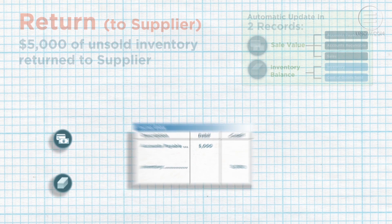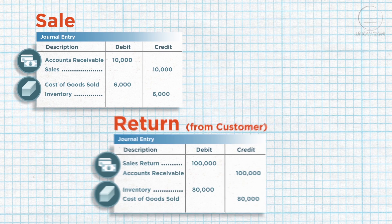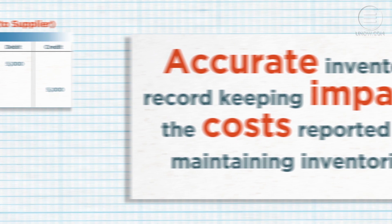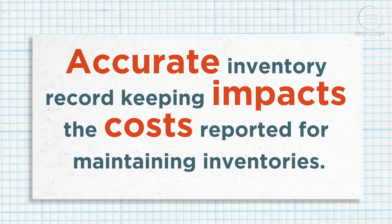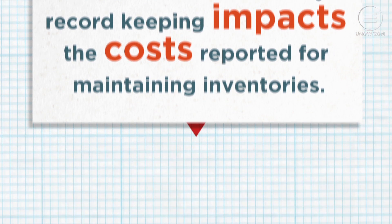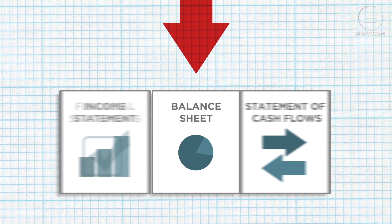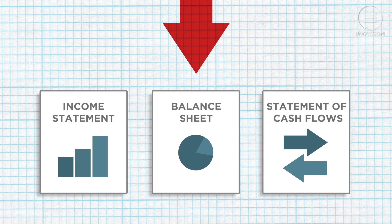Great work! You now know how to record sales entries using the perpetual inventory system. In accounting, accurate inventory record keeping impacts the costs reported for maintaining inventories. The next step will be to create the three main financial reports: income statement, balance sheet, and cash flow statement.